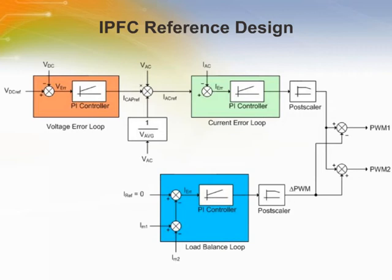The interleaved power factor correction system has three main compensators: one for voltage, one for current, and one for load balance. Additionally, a feedforward controller is implemented to compensate for sudden input voltage changes. The voltage error controller ensures the output voltage is not affected by load variations; its inputs are DC output voltage and the corresponding reference, and its output is the current compensator reference. The current error controller regulates the phase and shape of the input current — the sum of both inductor currents — measured using a shunt resistor. Its output is a PWM signal applied to the power MOSFETs.